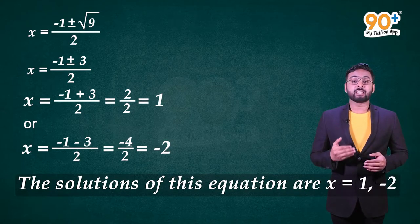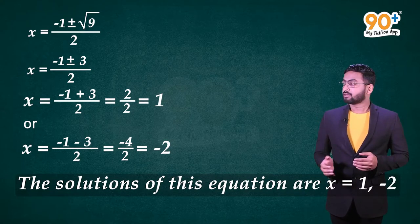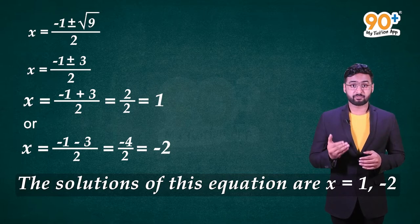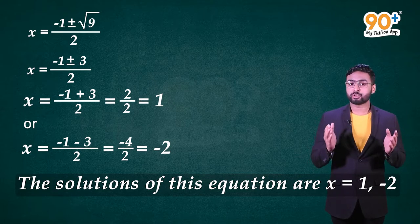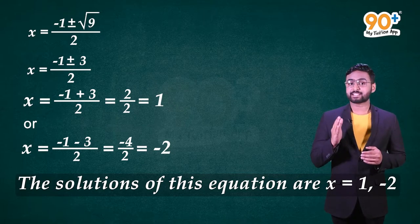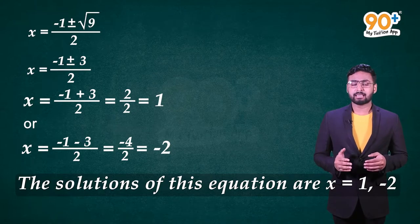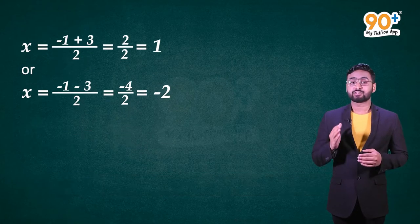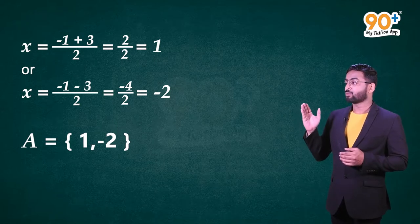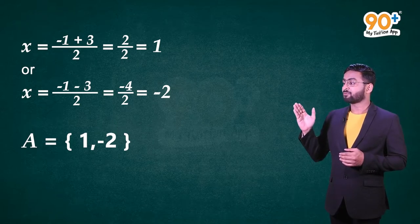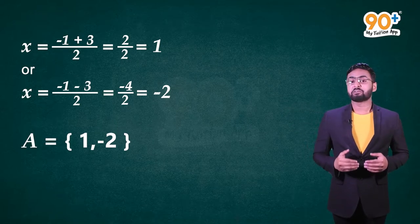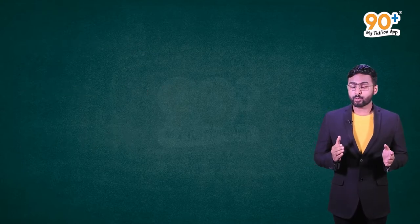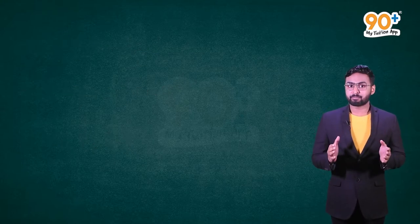The solutions of this equation are 1 and −2. Now that we have the solutions, let's write it in roster form. Let us denote the set with A. So A = {1, −2}, which is the required answer. Now let's move on to Example 2.